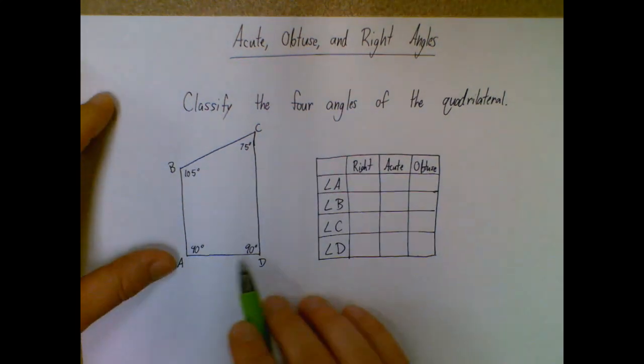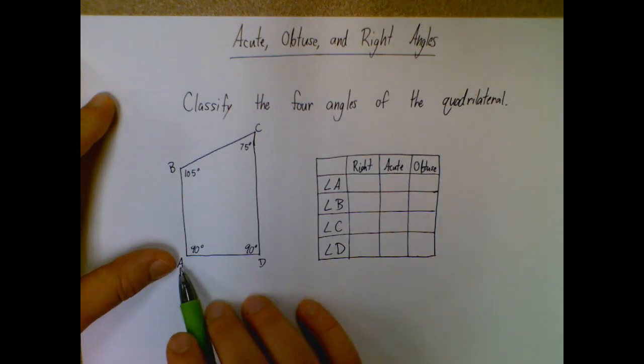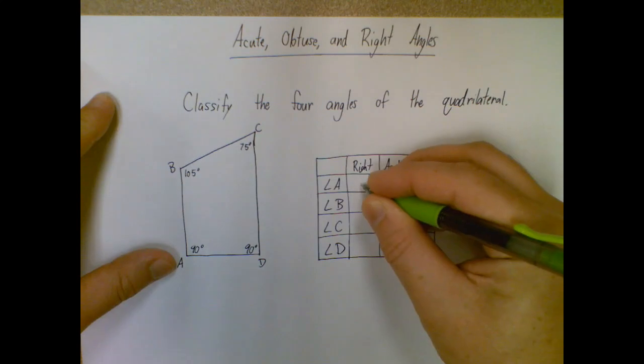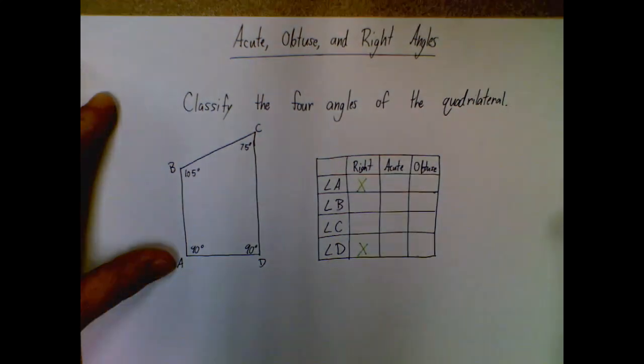So looking down here, we have two 90 degree angles, one at A and one at D. So those are both right angles. And D is also a right angle.